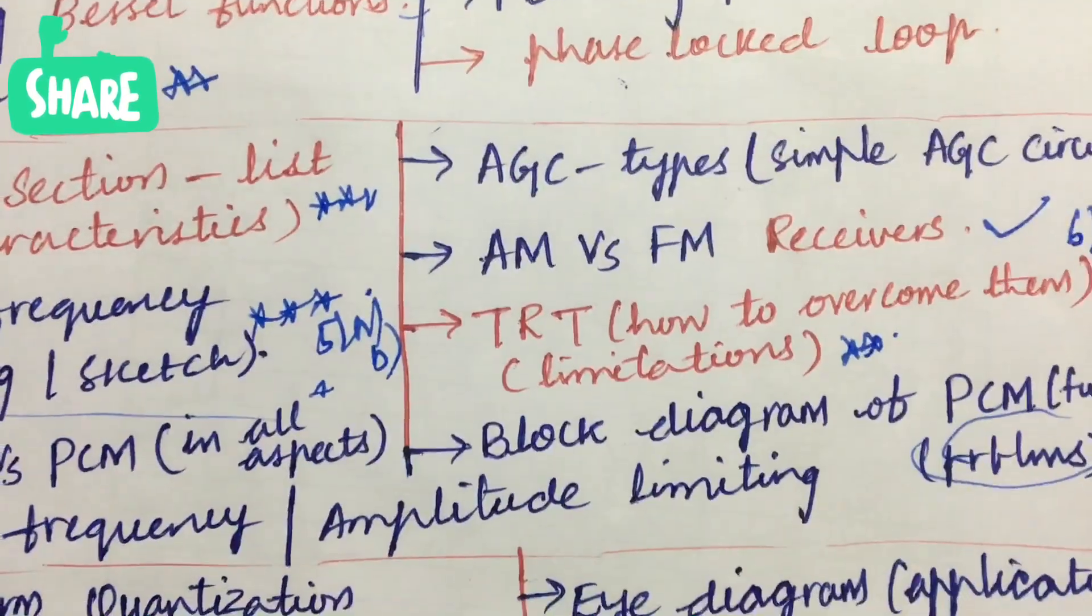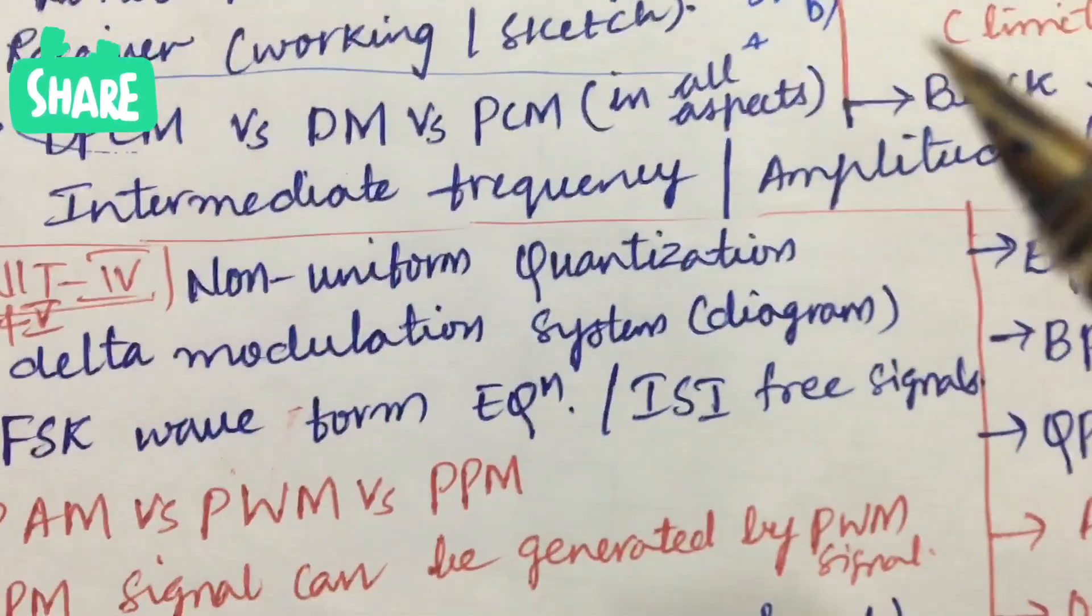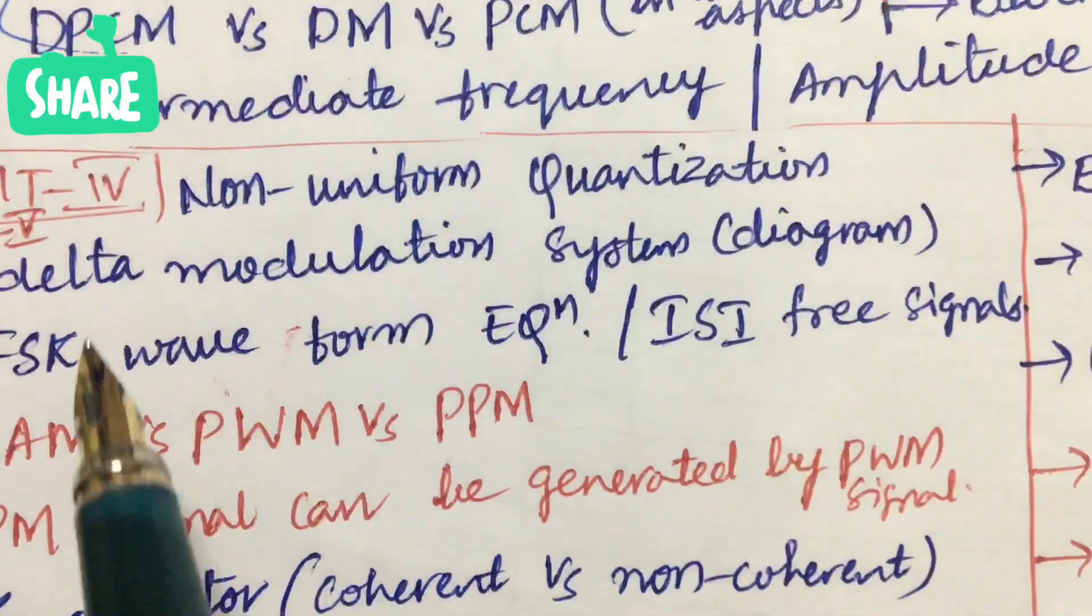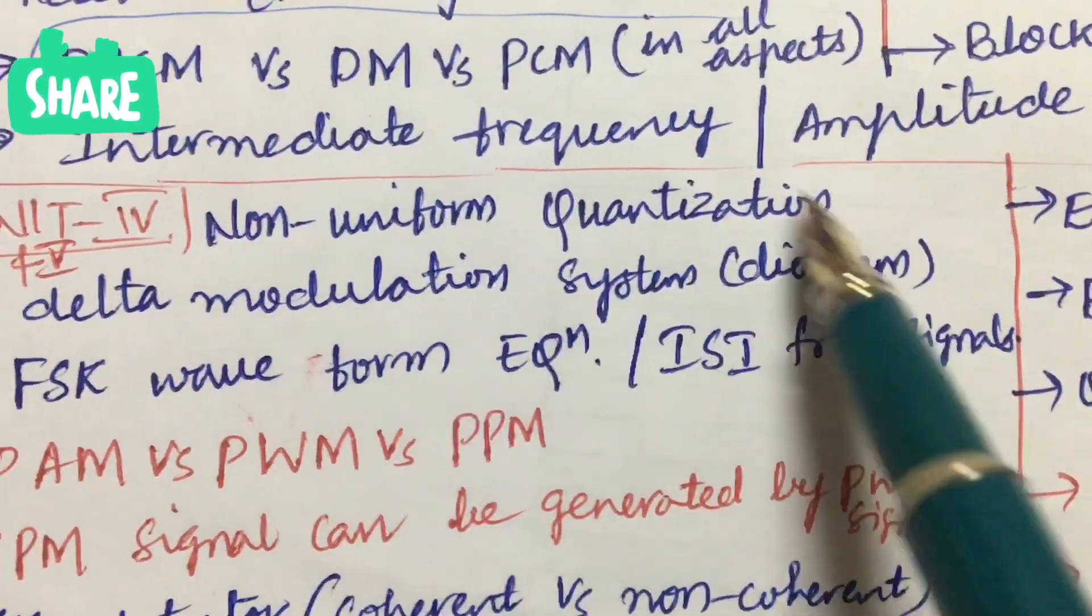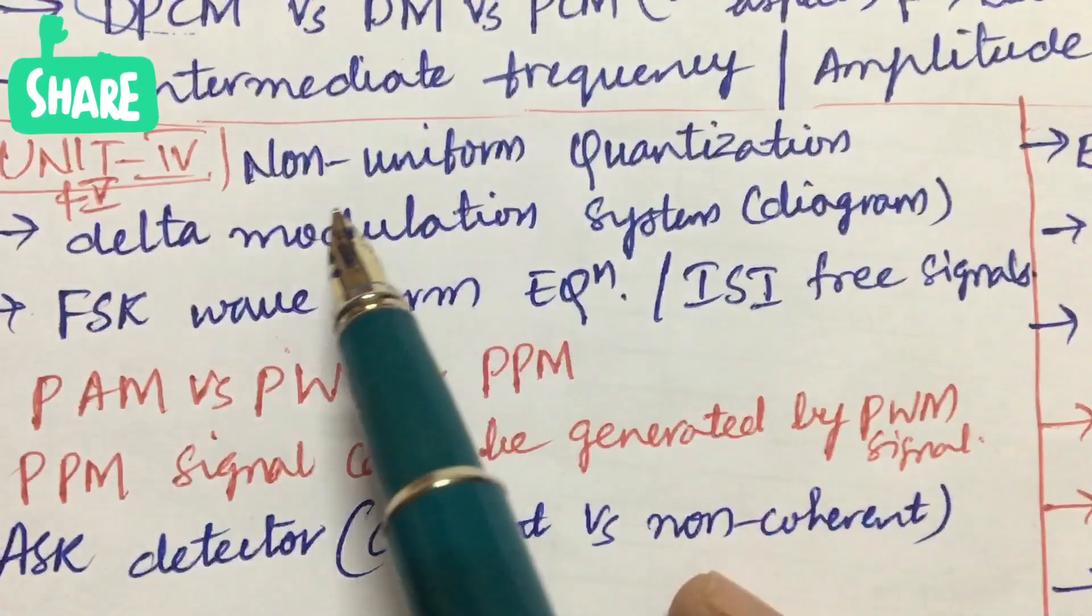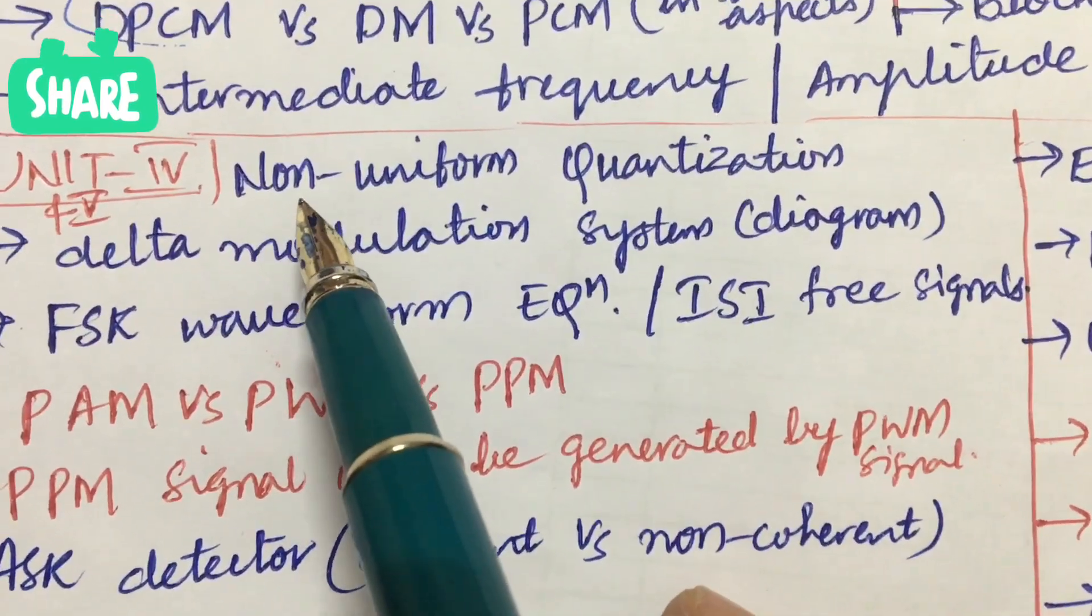Dear students, all the circuit diagrams need to be worked out only in pencil, please do carry that. And coming to the 7th and 8th questions, from this part you are going to get the 7th question as per the pattern. You will be getting only one question from 4th as well as 5th unit.